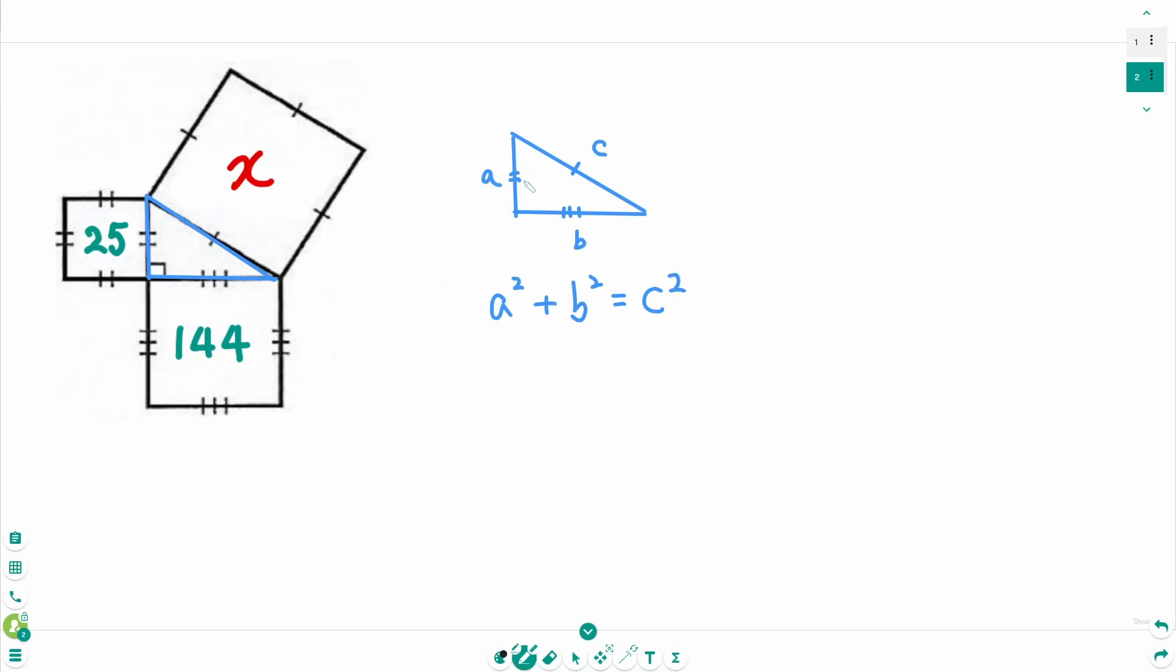This side is A. So A squared means the area of the small square, which is 25.